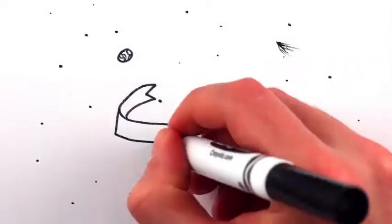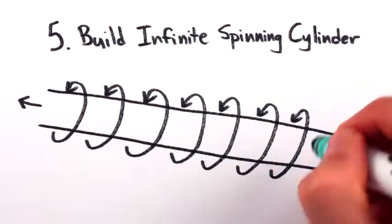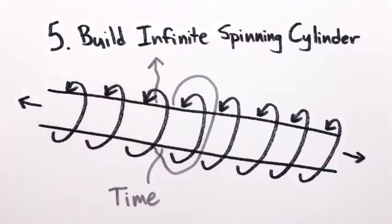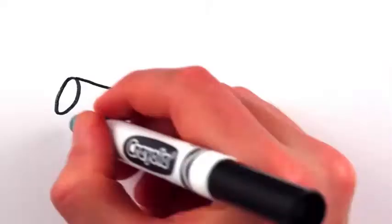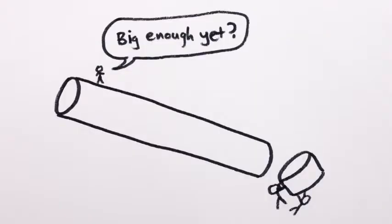Unfortunately, our universe isn't spinning. Maybe it would be easier to build an infinitely long super dense spinning cylinder, which would also curve spacetime enough to create a time loop. The problem, of course, is how do you build something that's infinite in size? Maybe you could just make it really, really big?